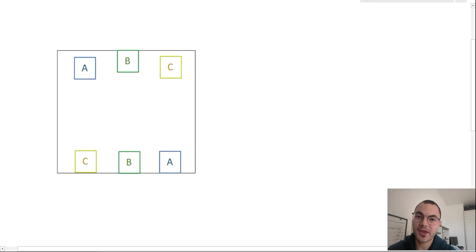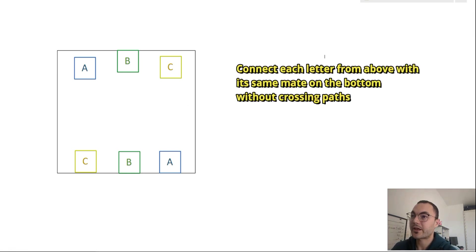We will illustrate the make it easier strategy with the following problem. Consider the following diagram: can you connect each small box on the top with the same letter mate on the bottom with paths that do not cross one another nor leave the boundaries of the large box?